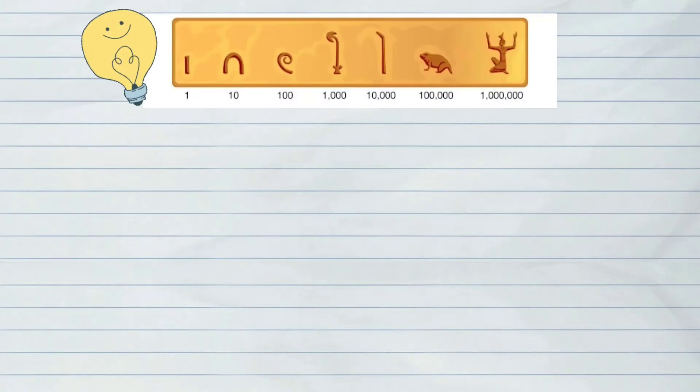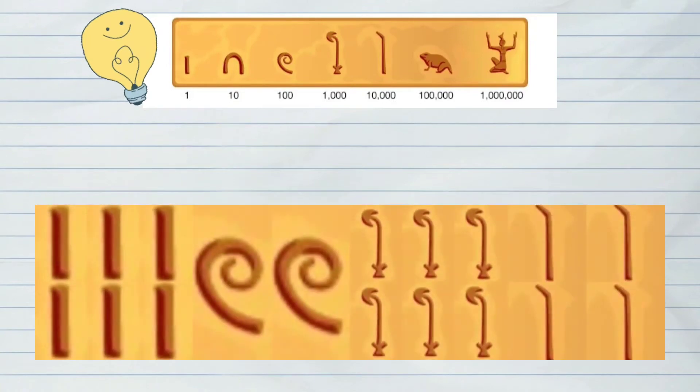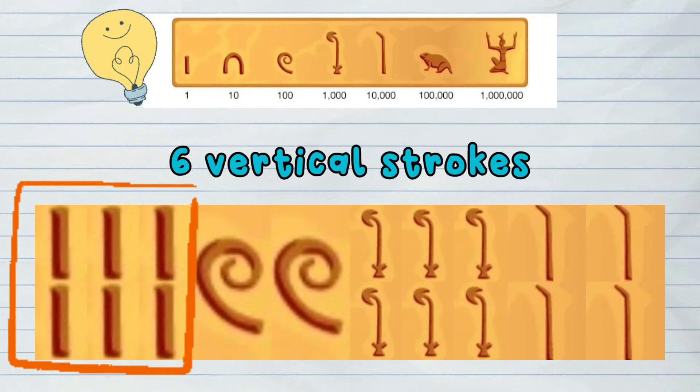Let us have this example. In this picture, we can see 6 vertical strokes. That makes it 6.